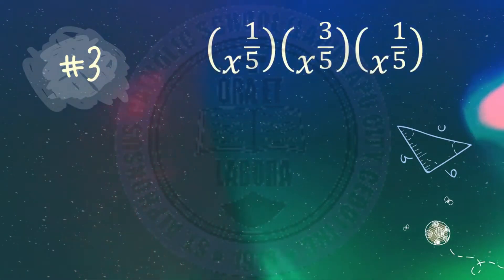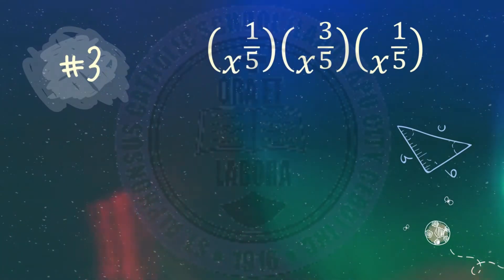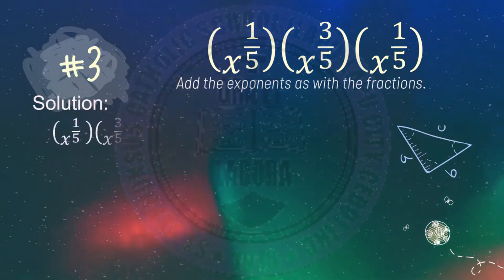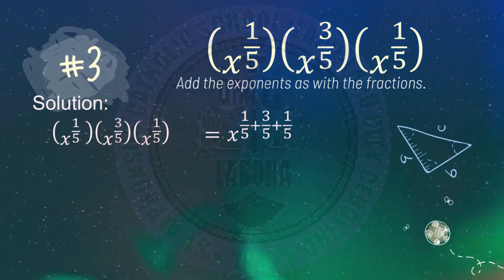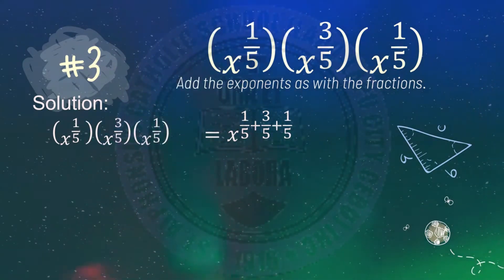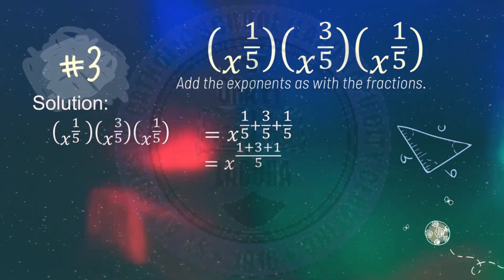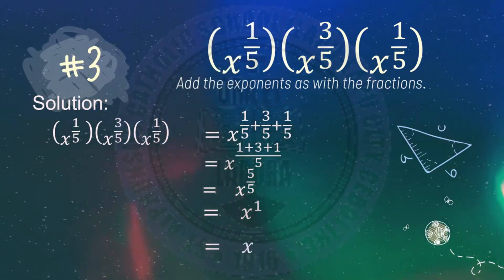Number three: x raised to 1 fifth times x raised to 3 fifths times x raised to 1 fifth. Since all terms share the same base, copy the base and add the exponents as with fractions: 1 over 5 plus 3 over 5 plus 1 over 5. That gives 1 plus 3 plus 1 equals 5 over 5, which simplifies to 1. So x raised to 1 is simply x.